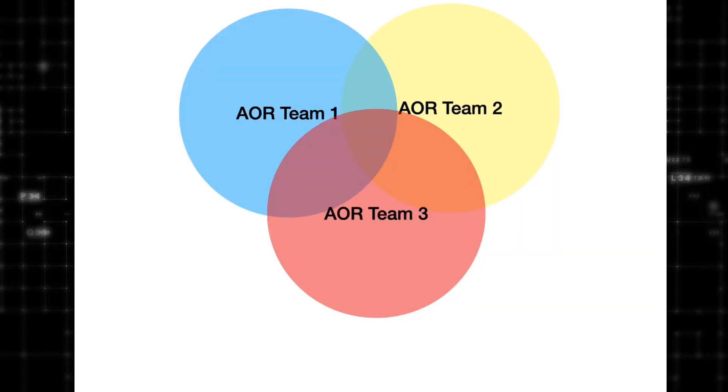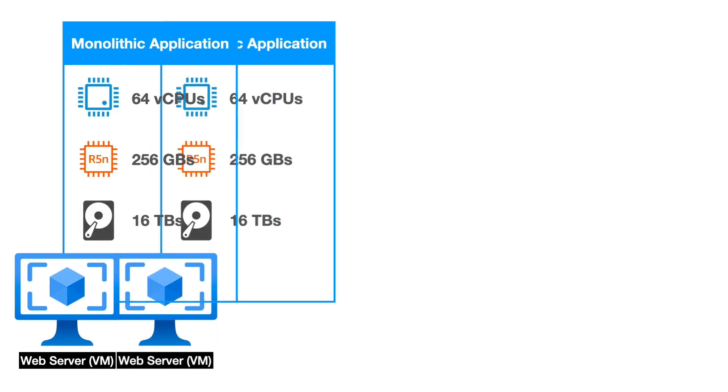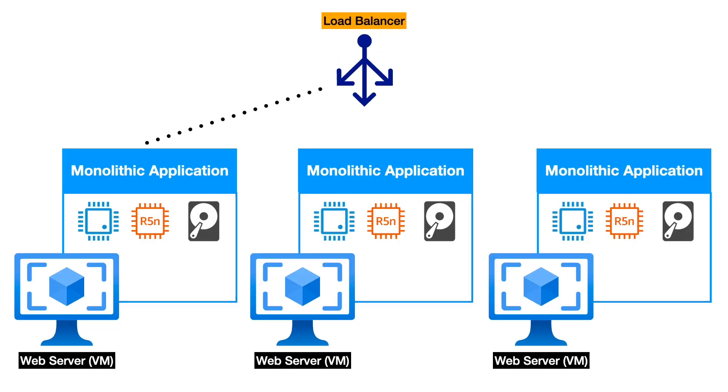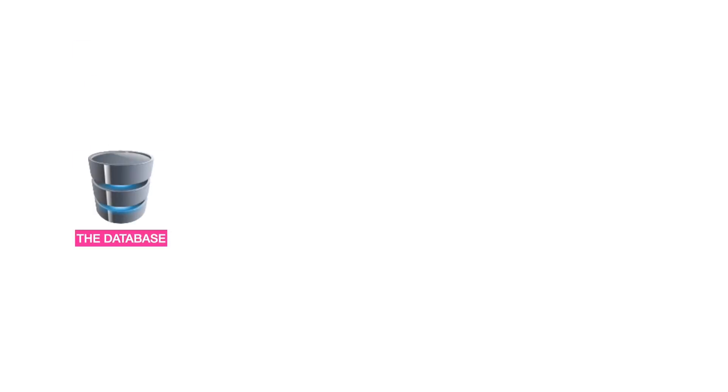Another problem with monoliths is that different teams contributing code around the same time may be touching the same files, leading to chaos when merging pull requests or doing multiple deployments a day. We can structure the code so that team ownership areas don't overlap, but this is not foolproof. On the infrastructure side, monoliths can become difficult to scale horizontally, and the database is going to be the biggest bottleneck — database transactions and queries will be your worst performance problem.